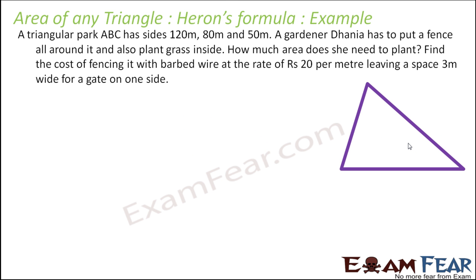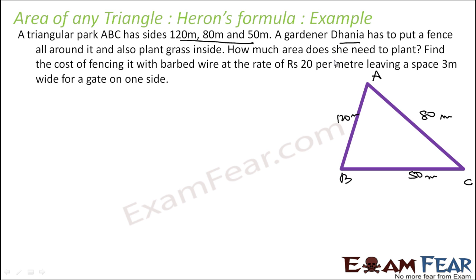A triangular park ABC has sides 120, 80, and 50 meters. A gardener, Dhania, has put a fence all around it and also planted grass inside it. How much area does he need to plant? So we need to find the area of this.